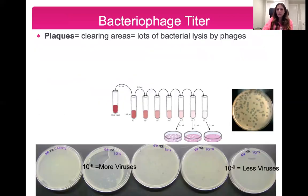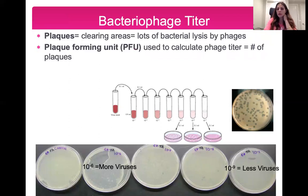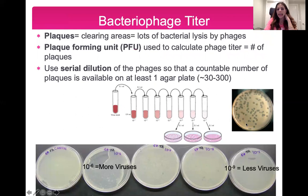After incubating your plate, you're looking for clearing areas which we call plaques. Every time you see a plaque or clearing area, it means that a lot of bacteria died or lysed because of infection by phages. Looking at this plate, the yellow or white areas are all bacteria, and any hole or clearing is where bacteria died due to the phage — that is a plaque. To calculate phage titer, we look at plaque forming units (PFU), or the number of plaques on a plate.